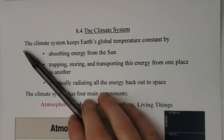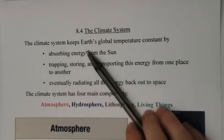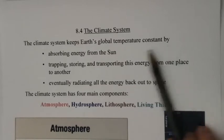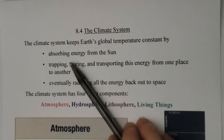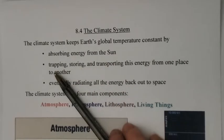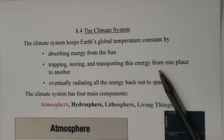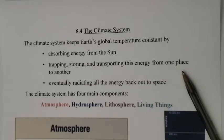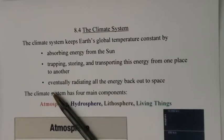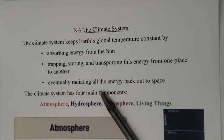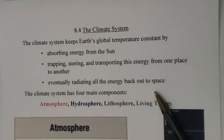The Earth's climate system keeps Earth's global temperatures constant by, first of all, absorbing energy from the sun. The Earth then traps, stores, and transports this energy from one place to another. For instance, the equator gets much more heat and that slowly moves towards the poles, or else we would freeze up here in Canada. And then eventually all that heat is radiated back into outer space.